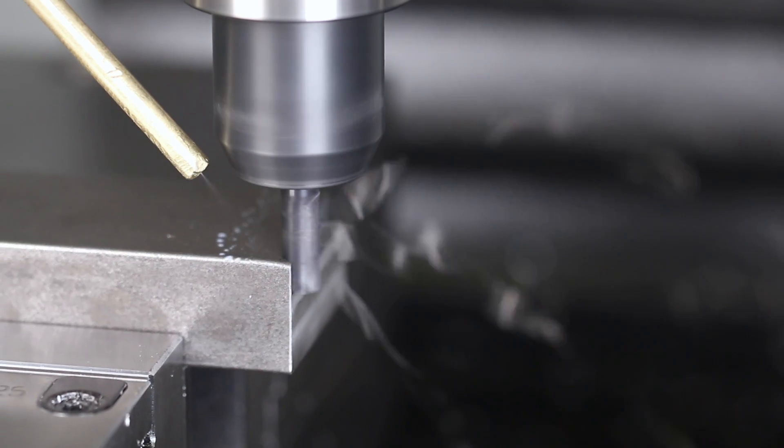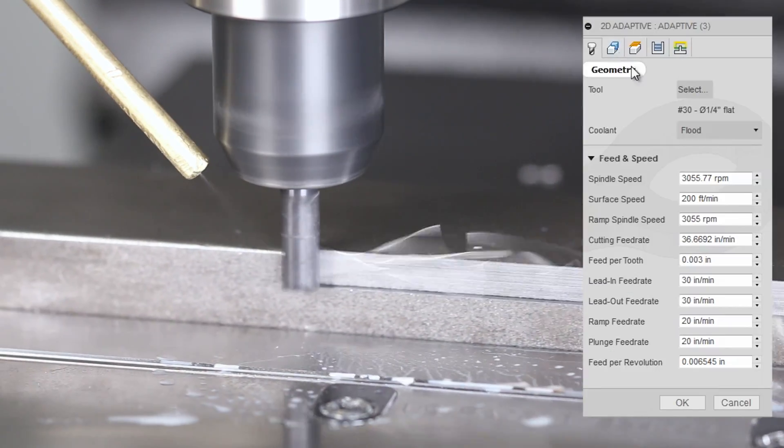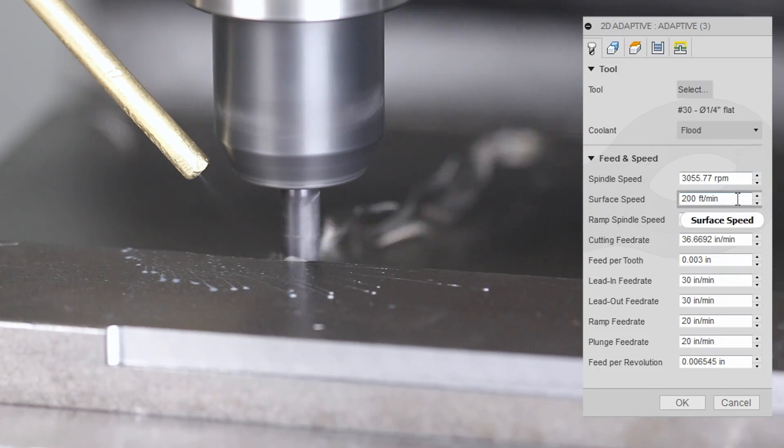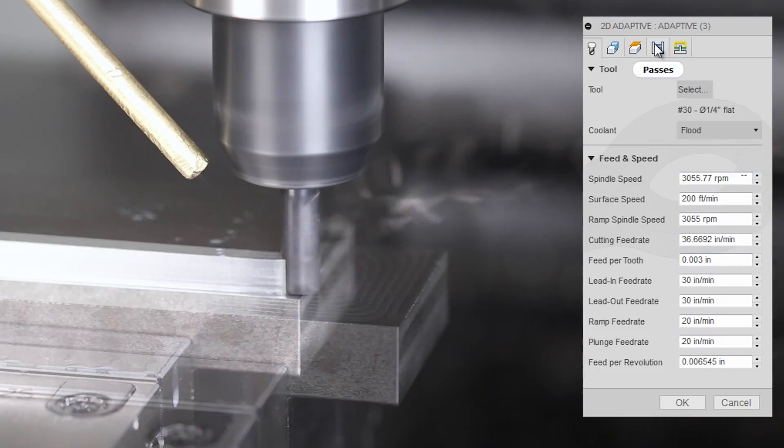Starting off, 2D adaptive, quarter-inch four-flute Lakeshore end mill, 200 surface feet, just a hair over 3,000 RPMs, 3 thou per tooth, about 36 inches a minute.